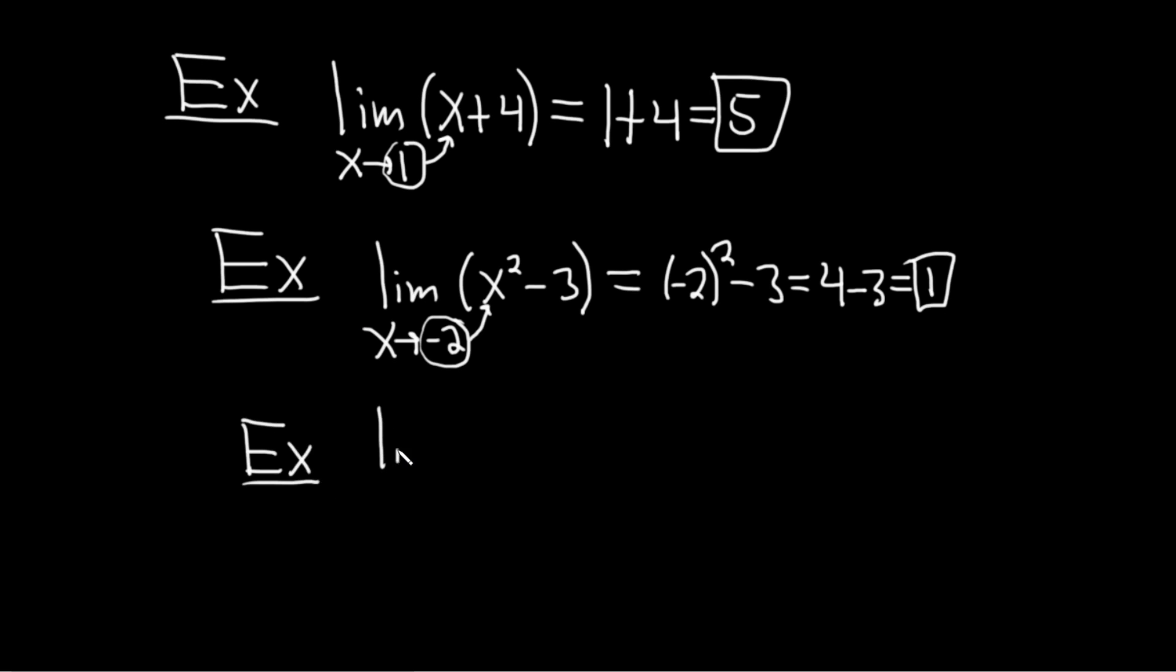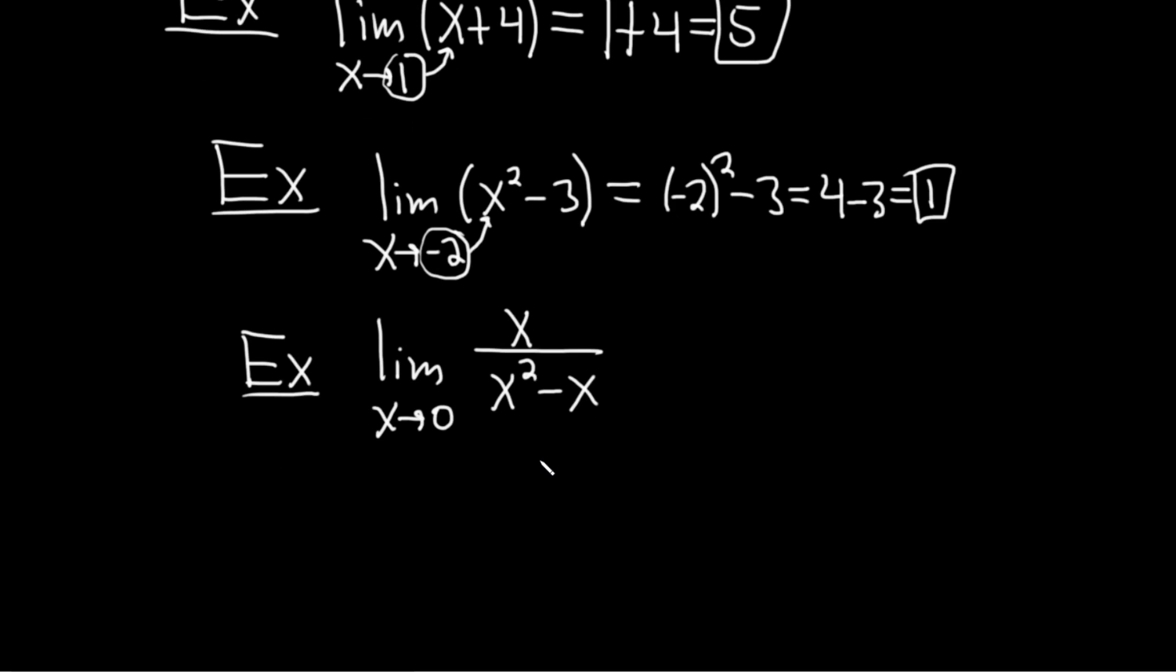Let's take the limit as x approaches 0 of x over x squared minus x. So let's try it. You should always try it. That should always be your first attempt. So if you plug in 0 here, what happens? You get 0 over 0 squared minus 0. So that's just going to be 0 over 0. Oh, no. That's no good. You can't have that. You can never have 0 on the bottom. So that doesn't work.